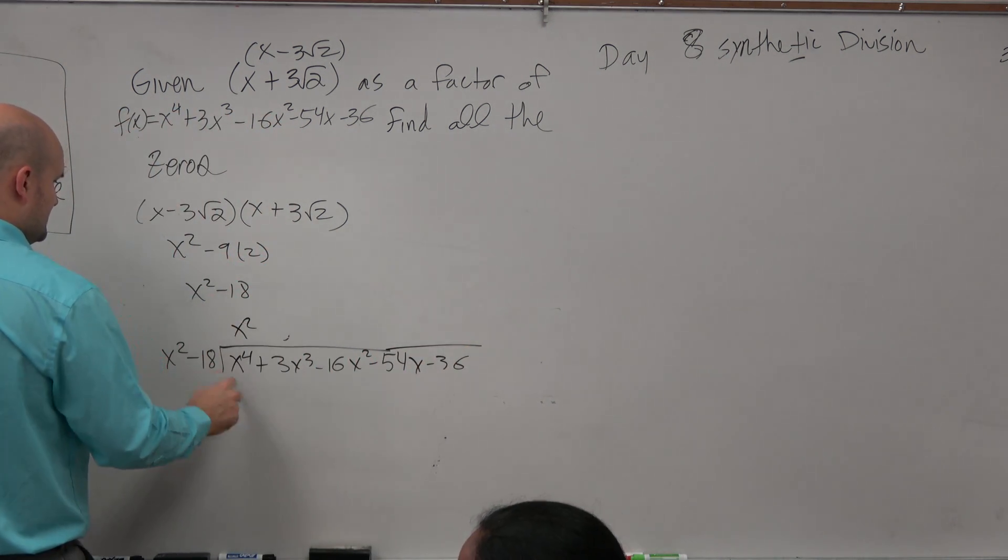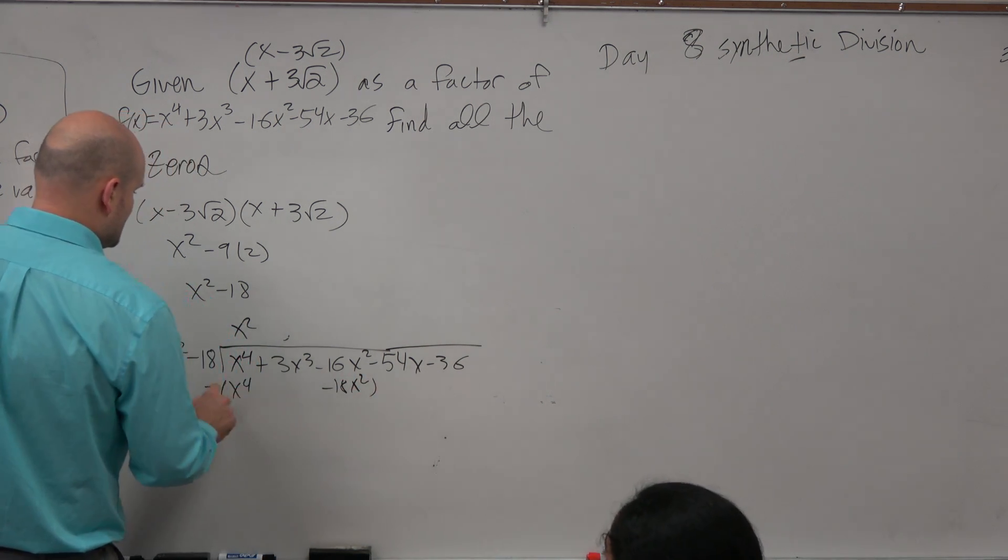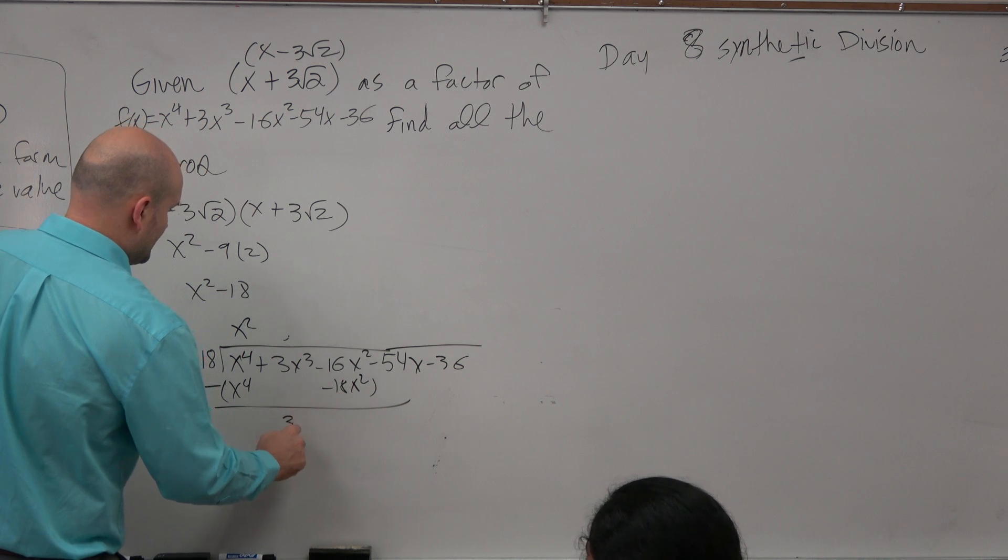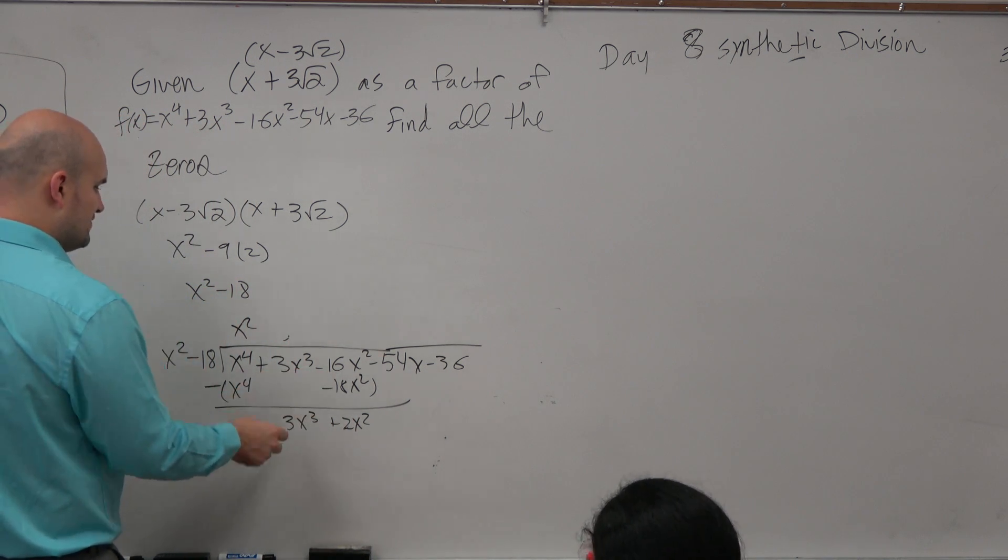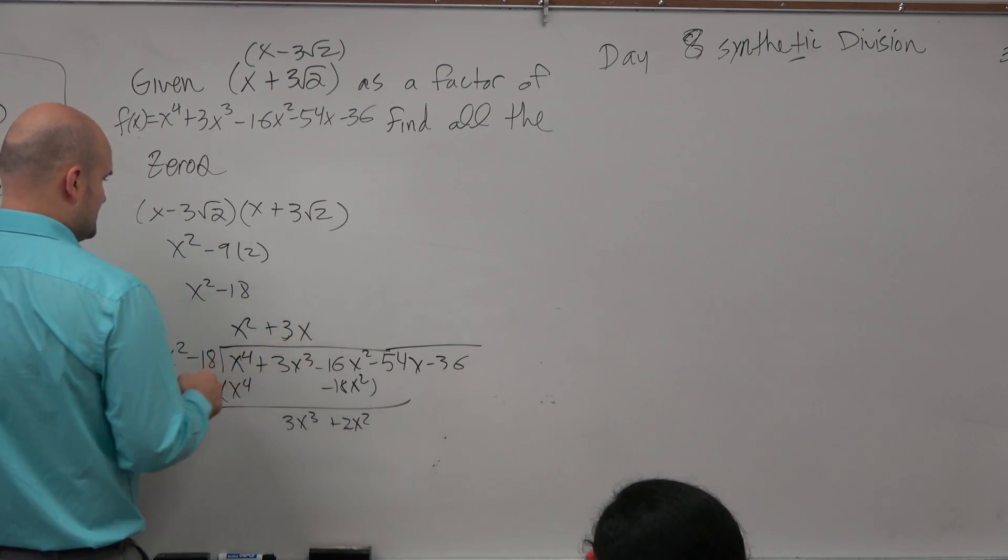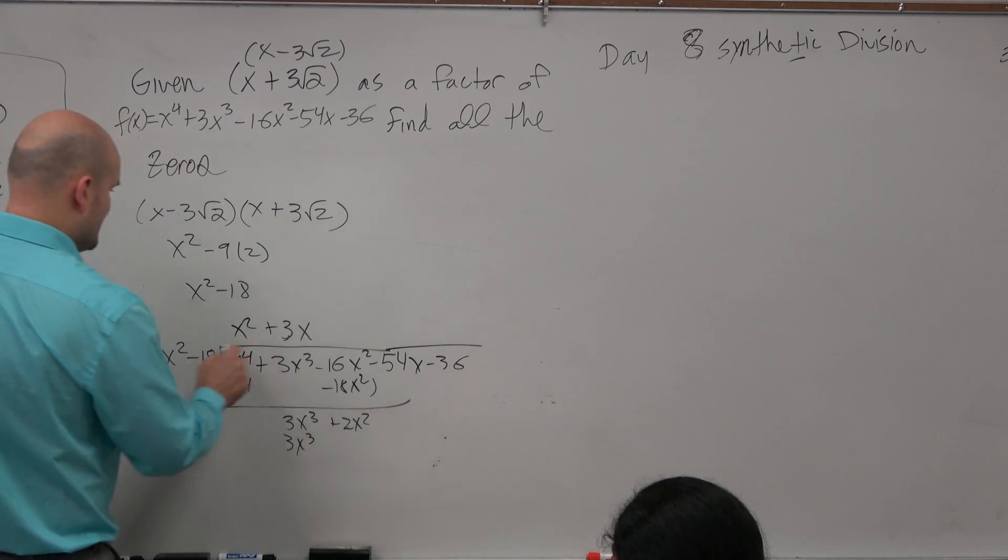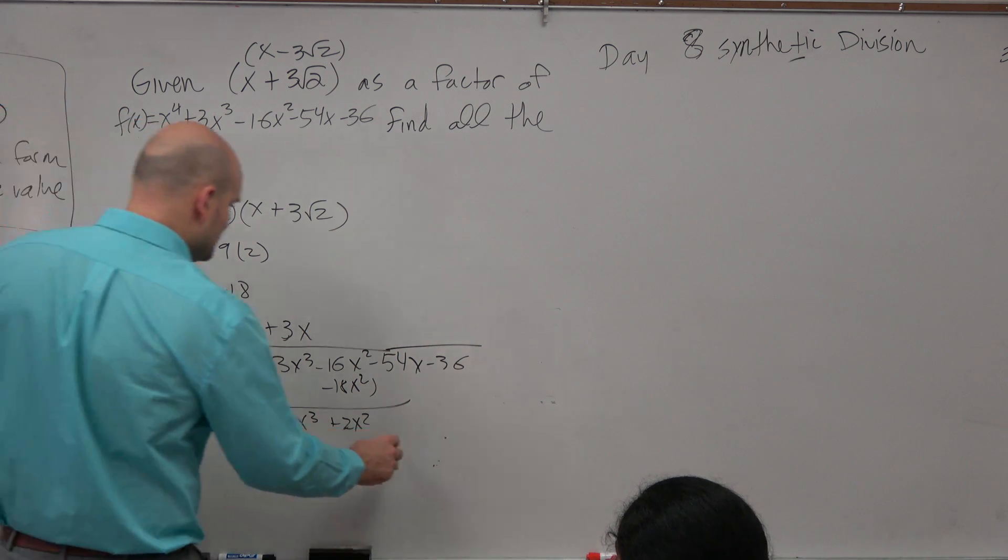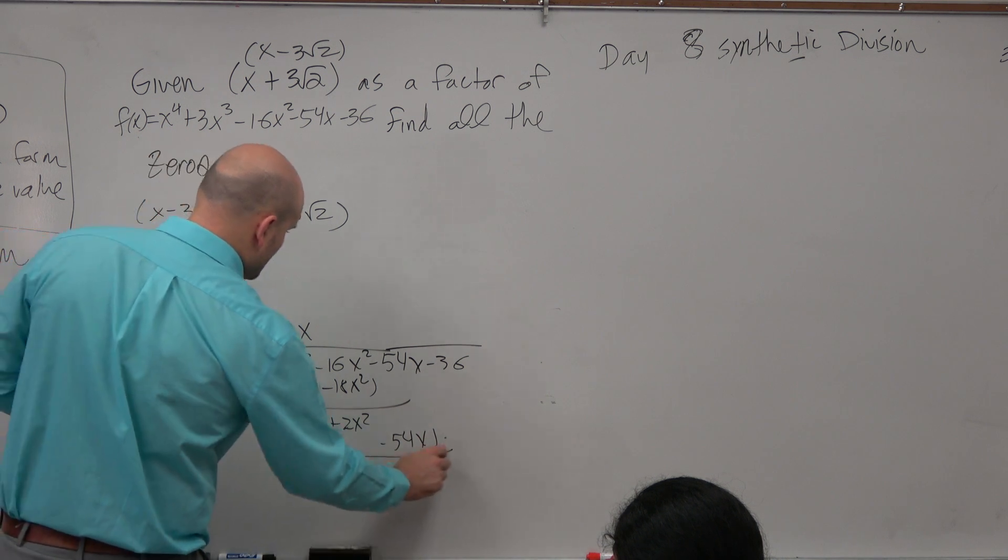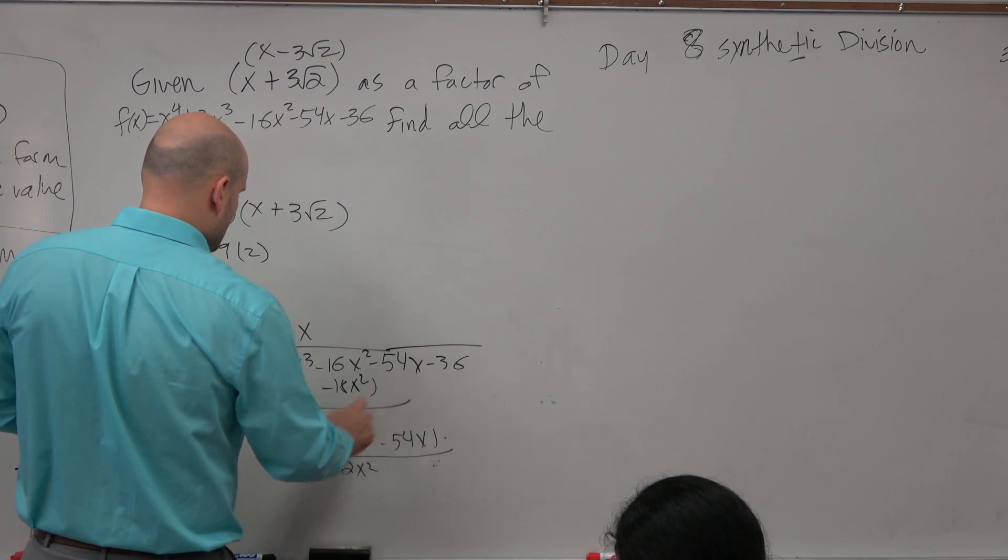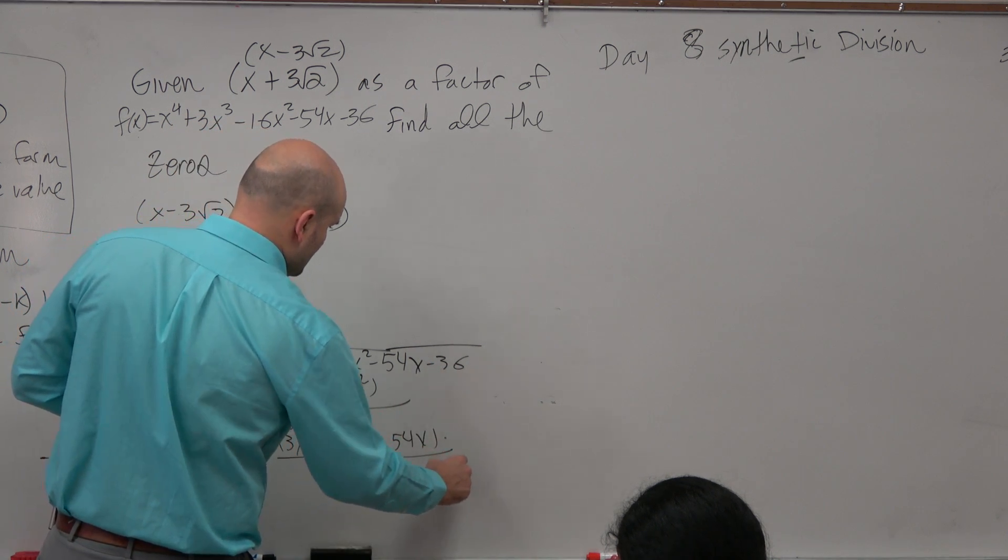So let's just go back and do this. You get x to the fourth minus 18x squared. Subtract. You get 3x cubed plus 2x squared because that becomes a positive. X squared goes in there 3x times. 3x times x squared is going to be 3x cubed. 3x times negative 18 is going to be a negative 54x. Subtract your rows. Here you get a 2x squared minus that. It actually goes to 0. And then you get a negative 36.